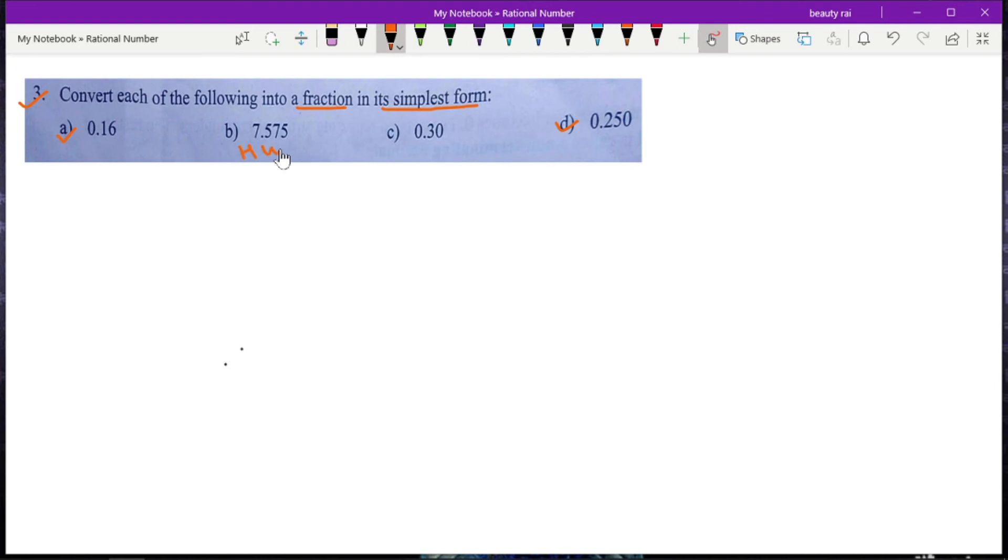In this question also, I'll solve parts a and d for you, and parts b and c are your homework. Let's start with part a: 0.16. Now we know that after the decimal we have two digits, so when we remove this decimal we'll get two zeros in the denominator, which means our fraction is 16/100. Now we'll simplify it: dividing both by 4, we get 4/25.